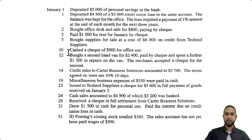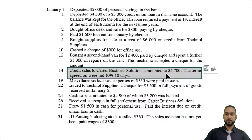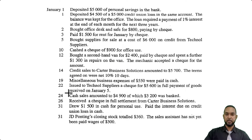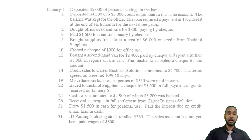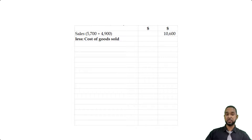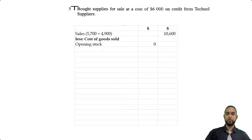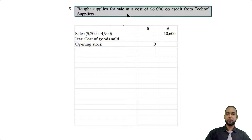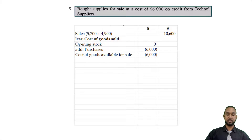Looking at the information, we have two sets of sales. The first came from Carter Business Solutions — that was $5,700. Then a couple of days later we had cash sales of $4,900. So we had one credit sale for $5,700 and one cash sale for $4,900, totaling $10,600.